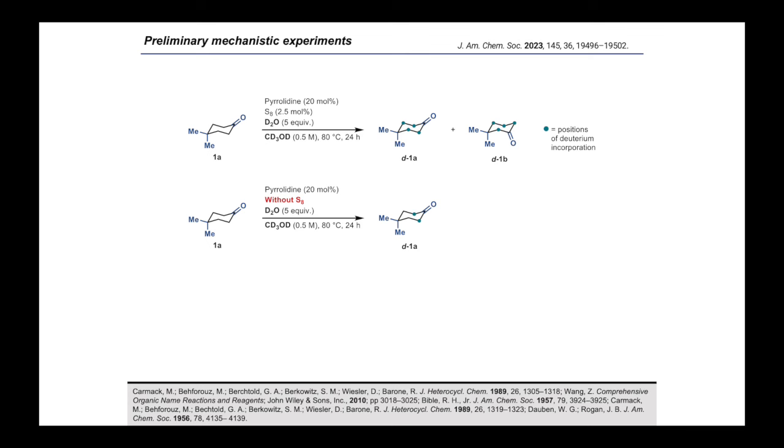Subsequently, this reaction was repeated but without the addition of sulfur. No isomerization was observed and deuterium incorporation was only detected alpha to the ketone, but not at the beta-methylene carbons. This result reflects the fact that sulfur is necessary to isomerize the putative enamine intermediate.